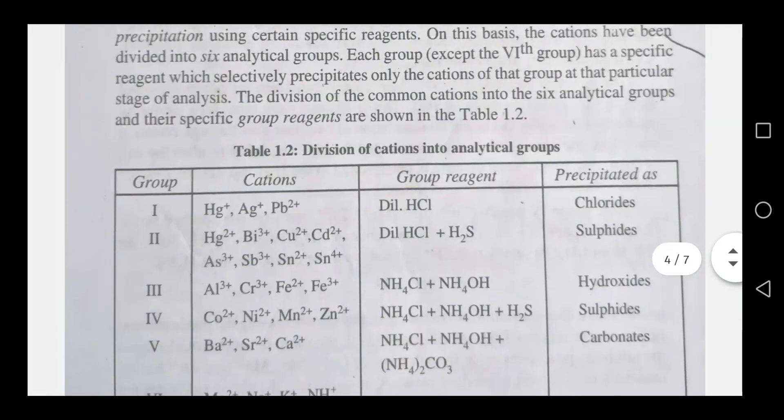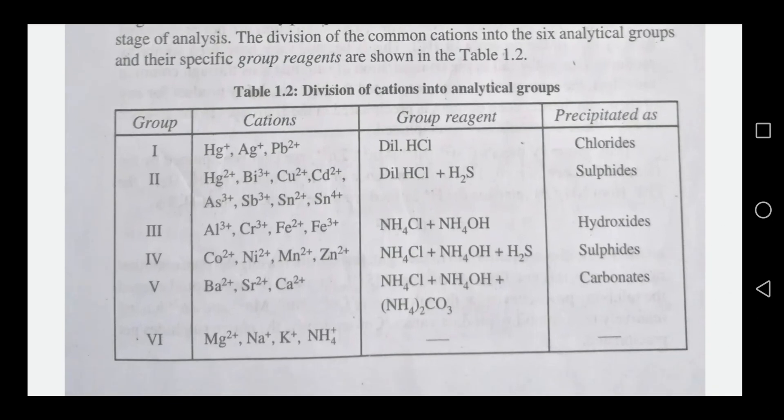The first analytical group contains mercury, silver, and lead cations. The second group contains mercury, bismuth, copper, cadmium, arsenic, antimony, and tin. The third group contains aluminum, chromium, and iron (Fe²⁺ and Fe³⁺), precipitated with ammonium hydroxide as hydroxides. The fourth group contains cobalt, nickel, manganese, and zinc, precipitated with ammonium hydroxide and H₂S.